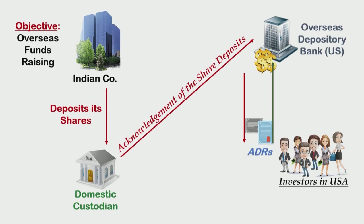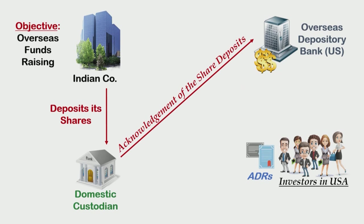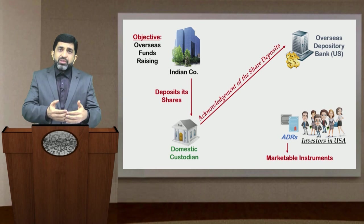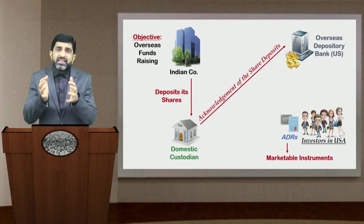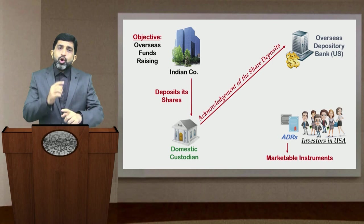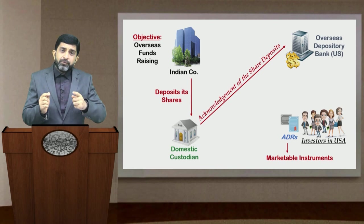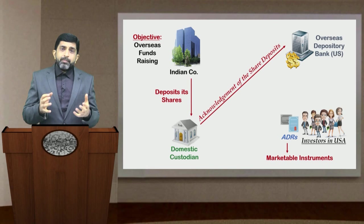These ADRs are basically marketable instruments. Once the ADRs have been issued by the depository bank and held by investors in the USA, they can keep buying and selling these ADRs among themselves. ADRs are documents, receipts, certificates where there is a backing of the shares issued by the Indian company — the shares are the underlying instruments to the ADRs. With the fluctuation of the share price of the Indian company, the value of the ADR will also fluctuate, because the ADR derives its value from the price movement of those shares.